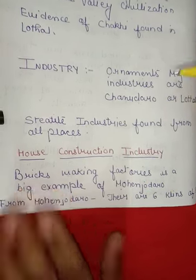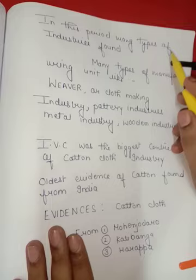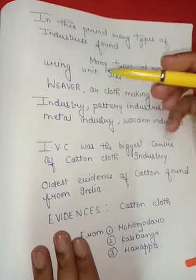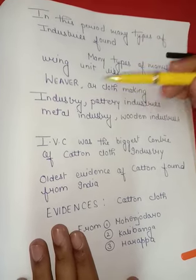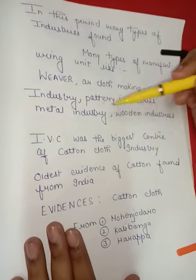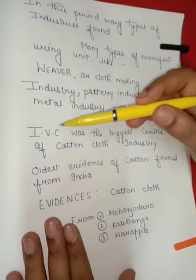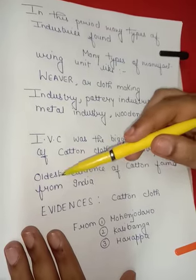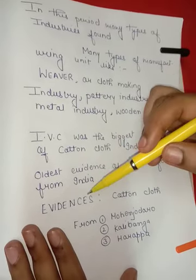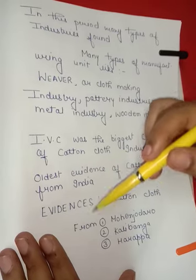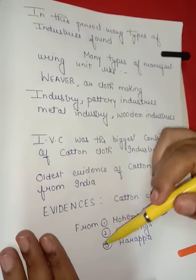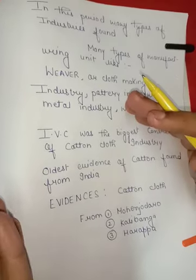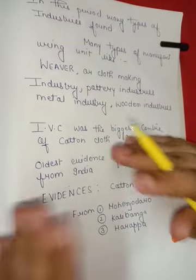Many types of manufacturing units existed, like weaving or cloth-making industries, pottery industries, metal industries, and wooden industries. Indus Valley Civilization was the biggest center of the cotton cloth industry. The oldest evidence of cotton is found from India — evidence of cotton cloth from Mohenjo-daro, second from Kalibangan, and third from Harappa.